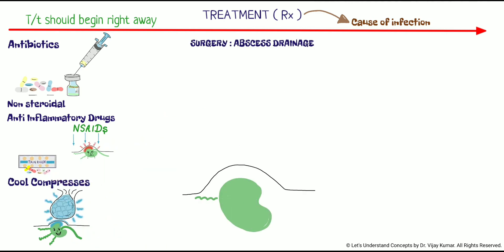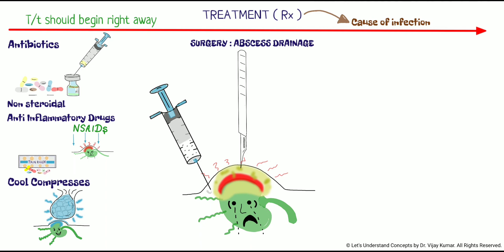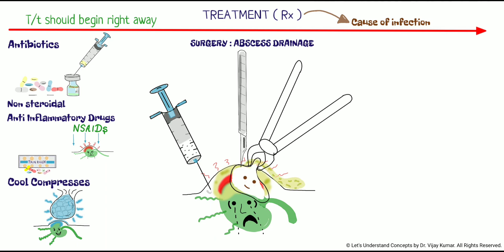Surgery includes abscess drainage. If a lymph node itself becomes infected, an abscess may form. Swelling will usually go down quickly when the abscess is drained. To do this, your doctor will first numb the area, then they'll make a small cut that allows the infected pus to escape. The area may be packed with gauze to ensure healing.